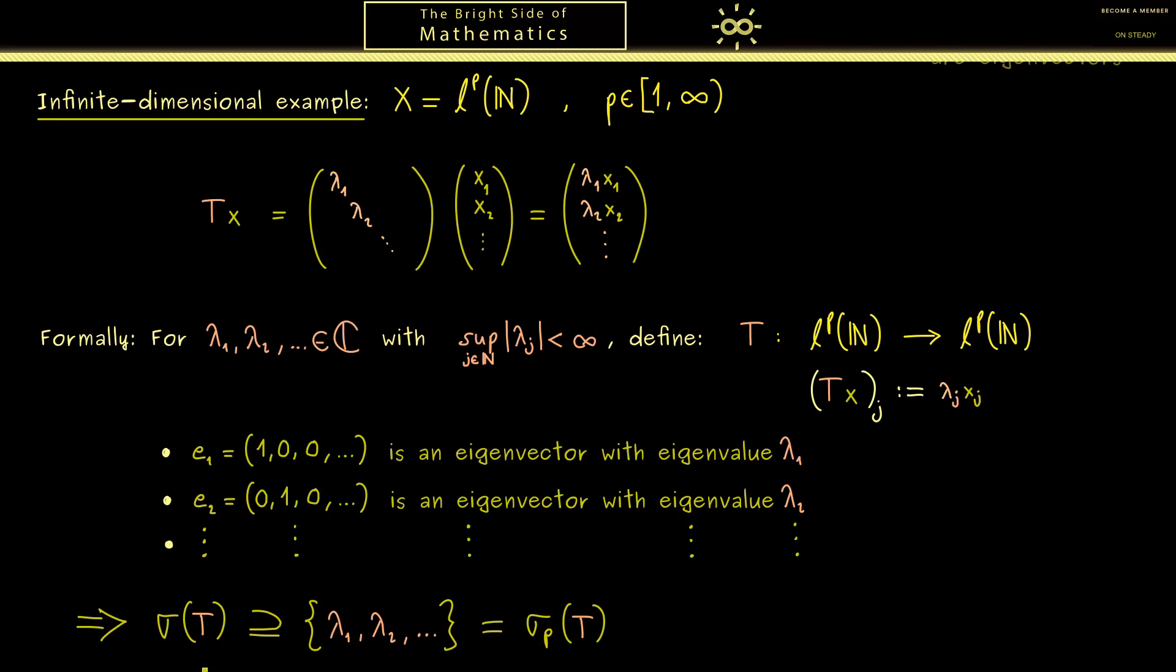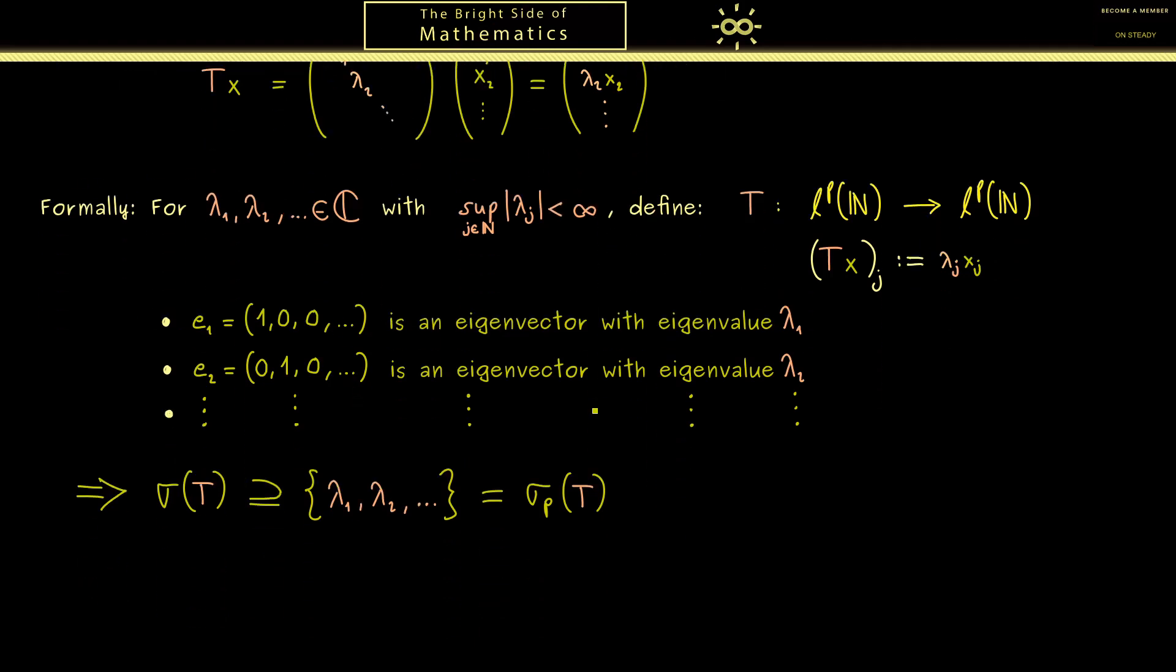However you already know this is in general not the whole spectrum of T. Indeed the important thing that could happen is that this set is actually infinite, and then it has an accumulation point.